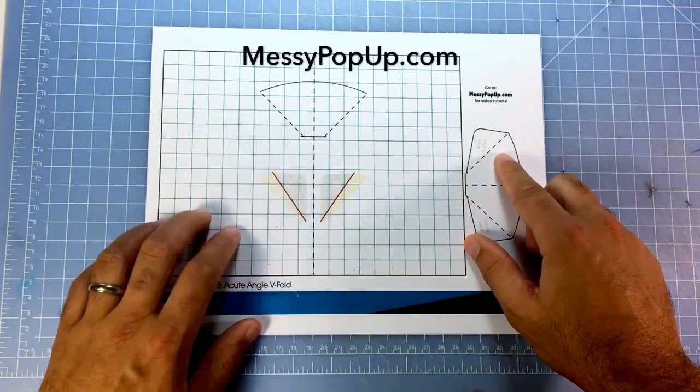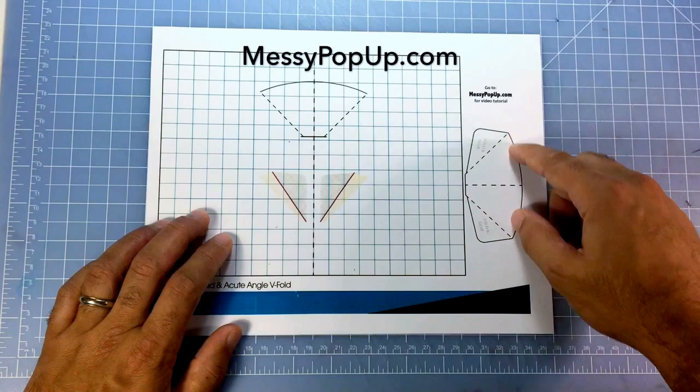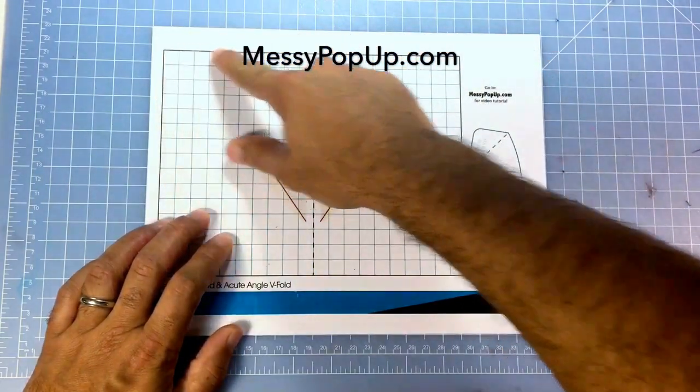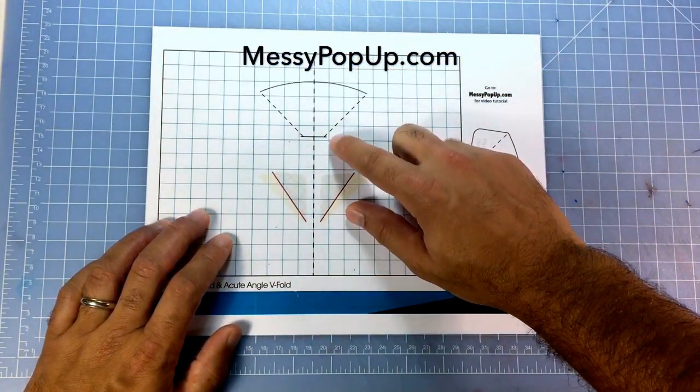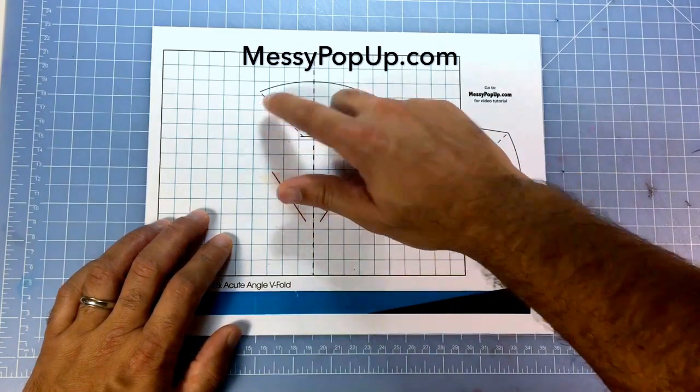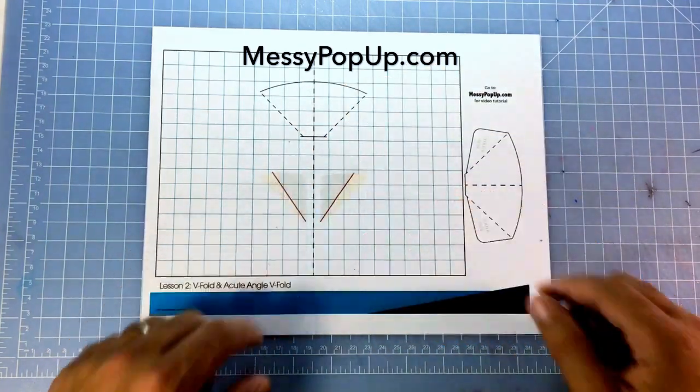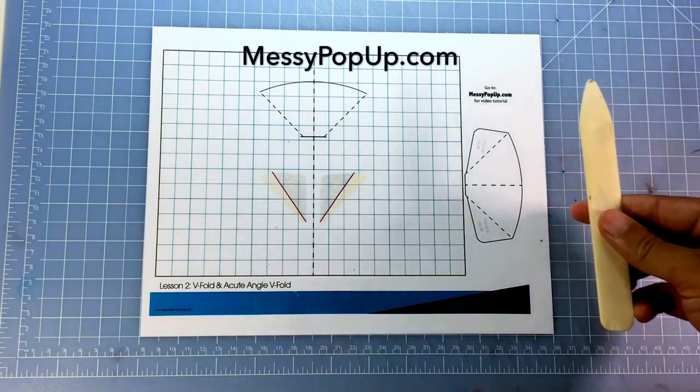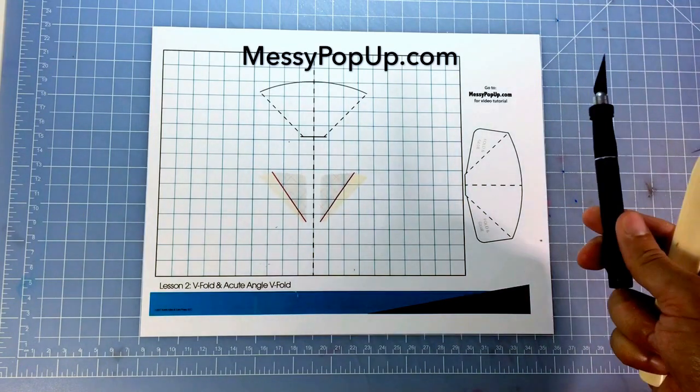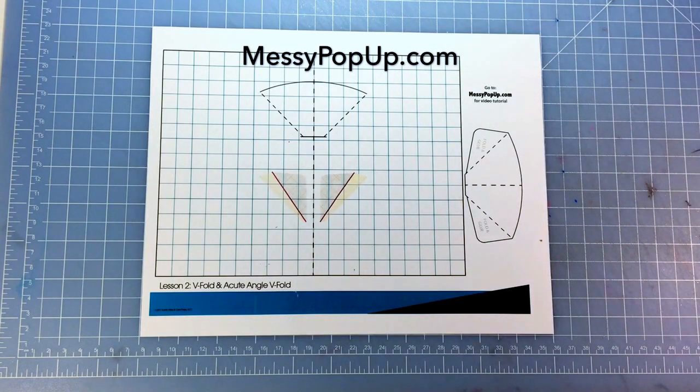So after that we're gonna go ahead and just make our cuts, which are the solid black line, and then we're gonna make folds on the dotted lines. Don't worry about these right now. I'm gonna make my folds with a bone folder, and I'm gonna make my cuts with an X-Acto blade. So let's go ahead and do that now.